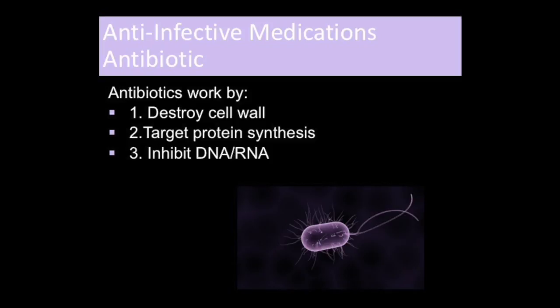When the cell wall of bacteria is destroyed, it is killed. Without its proteins, the bacteria can't carry out vital functions, including asexual reproduction. When we inhibit the RNA and DNA synthesis, the bacteria cannot multiply.